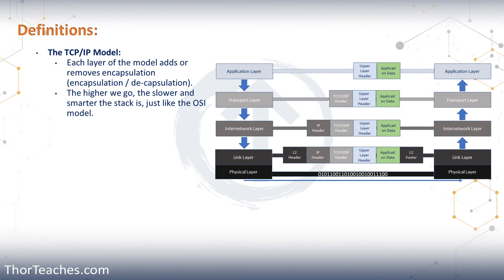Over here on the right, you can see a very simplistic way of looking at how packets travel through our networks and the headers that are added or removed for each layer. The green box is the actual data — what we want to send from A to B. On the application layer, we add the upper layer headers, telling it that it's a website and it is HTTPS. Then at the transport layer, it decides TCP or UDP and we add the port number. Since it is a secure website, we get a TCP header and port 443. Then on the internetwork layer, we add the IP header — the source and destination IP. On the link layer, we add the layer 2 header, and then finally on the physical layer, this is where we send the actual data.